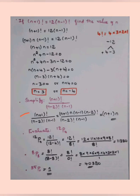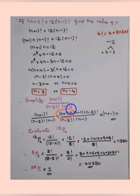Simplify (n+1)! / [(n−2)! × (n−1)]. Expand (n+1)! as (n+1) × n × (n−1) × (n−2)!. Write the denominator as (n−2)! × (n−1). The (n−2)! cancels, and (n−1) cancels, leaving (n+1) × n as the answer.